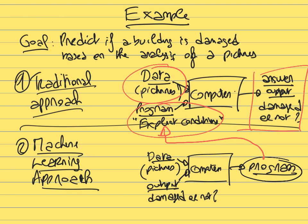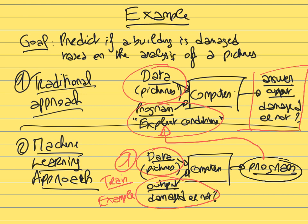The process has different steps. Step one: provide data associated with answers — this is training the model, providing both input data and corresponding answers. Then the computer learns to come up with a program. Step two: once you have that program, use it to make predictions on new, unseen data.